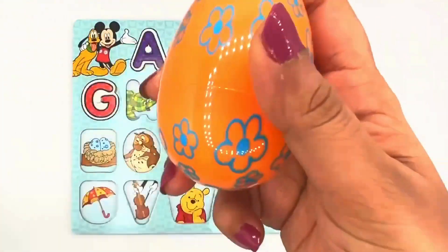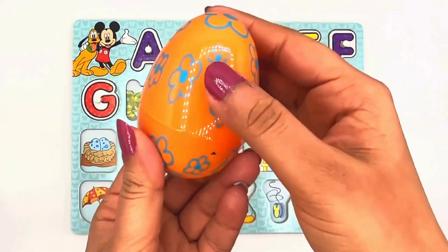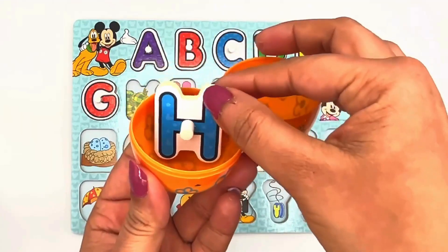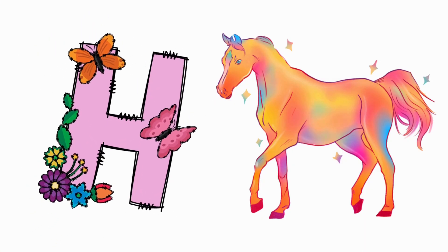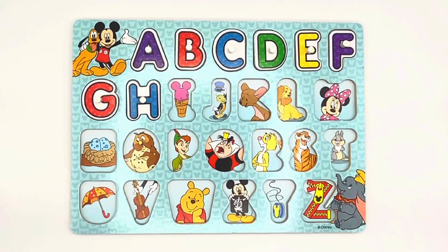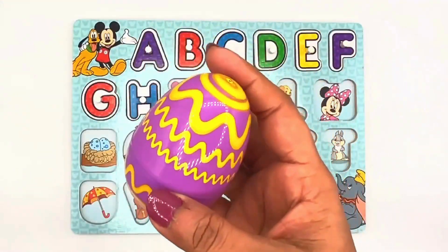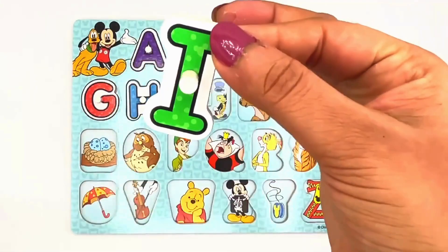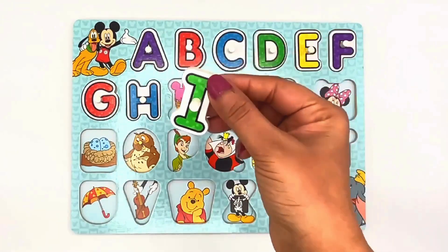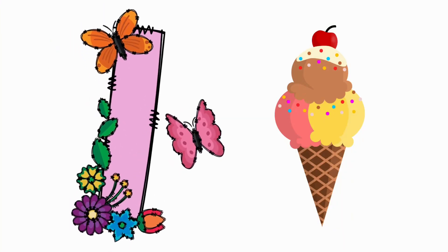Let's pick the orange egg. Open. Wow, I see the letter H. H for horse. Now let's pick the purple egg. It's so beautiful. Let's open it. I see the letter I. I for ice cream. Yummy.